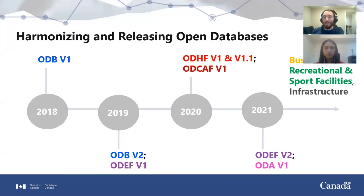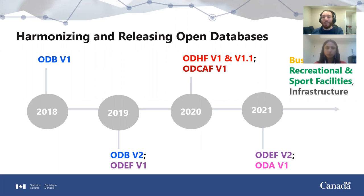We started this project in 2018 with the Open Database of Buildings. In 2019 we released an update to that database as well as an Open Database of Educational Facilities. In 2020 we released an Open Database of Healthcare Facilities, put together very quickly in the face of the COVID pandemic when people were missing basic information about where hospitals, long-term care homes, and clinics were in Canada. We also quickly put together an update with enhanced deduplication and updated sources. Also in 2020, we developed the Open Database of Cultural Learning Facilities. In 2021 we released an update to our Open Database of Educational Facilities and the first version of an Open Database of Addresses. We are now working on open databases of businesses, recreational support facilities, and infrastructure.